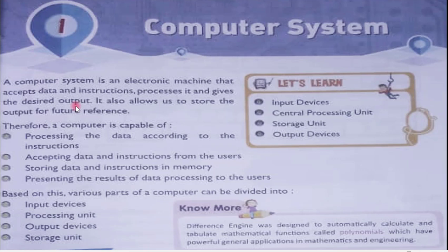Each and every machine works in this concept only. It also allows us to store the output for future reference. Nowadays computers have very large storage — hard disks in terabytes — so you can store a large amount of data for future use. You can take the example of your mobile also: when you receive videos on WhatsApp and save them, you can share or use them later.